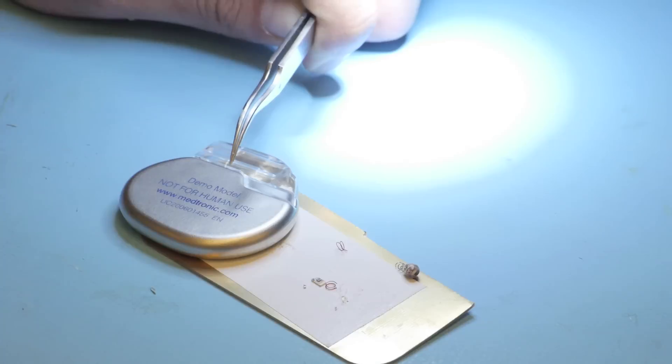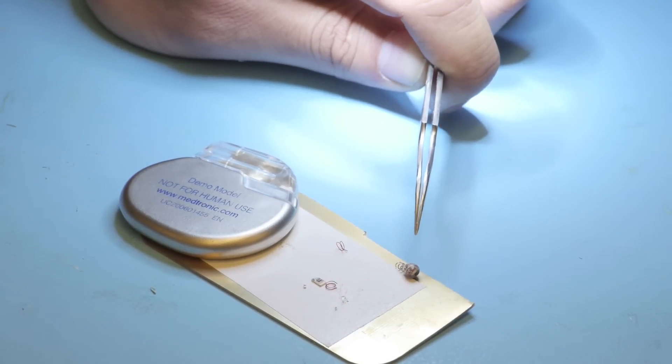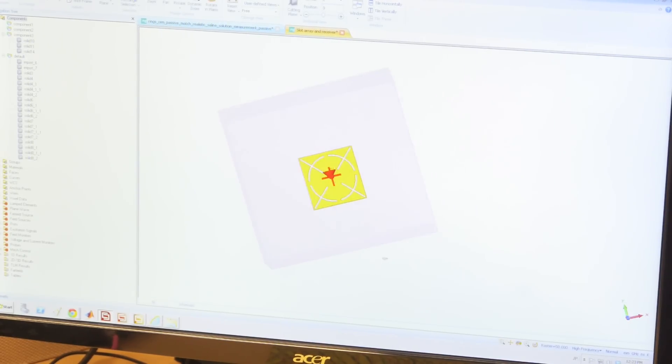With this power transfer method, we can miniaturize the last thing that makes medical devices so large, which is the battery, and make it about the size of a grain of rice. We can power it nearly anywhere in the body, including the heart or the brain.